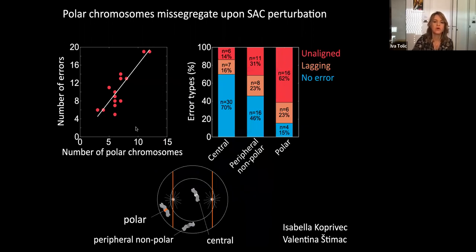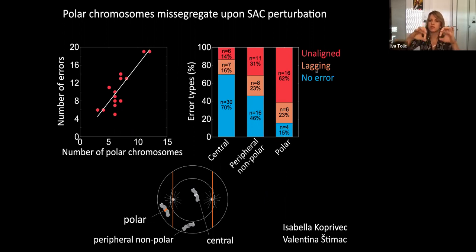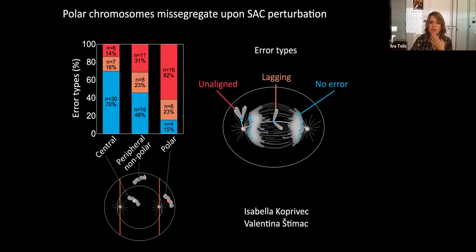We found that the number of errors correlates with the number of polar chromosomes: cells with more polar chromosomes at the beginning of mitosis made more errors at the end. When we analyzed error types, polar chromosomes in particular showed many errors — either unaligned chromosomes that stay at the pole, or lagging chromosomes. Central chromosomes predominantly made no errors. This shows that where a chromosome is at the beginning of mitosis determines how many segregation errors will occur.